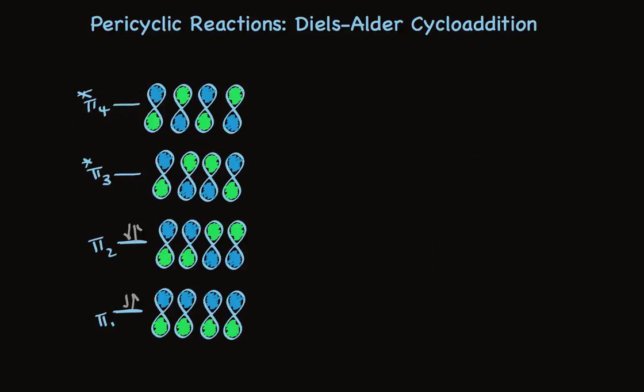We're talking about a diene, so we know it has four pi molecular orbitals, two bonding, two antibonding. The two bonding orbitals hold all four pi electrons. And pi two is what we call the HOMO, the highest occupied molecular orbital. So this is the MO picture for the pi system from one of the reacting components in the Diels-Alder reaction.